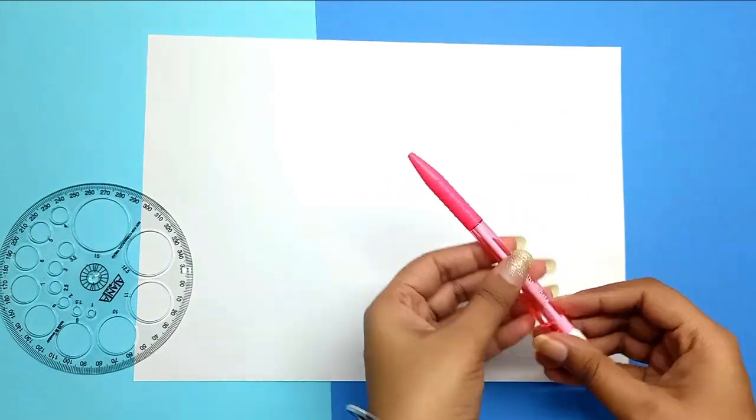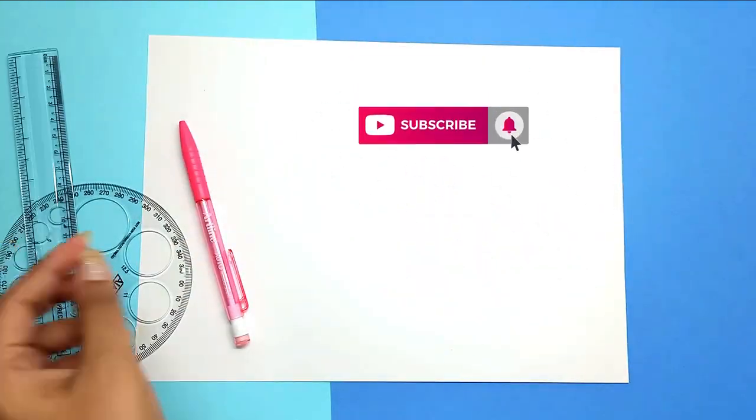So to start up with, you need to take an A4 size cartridge paper, a protractor, a pencil, a scale and a compass.